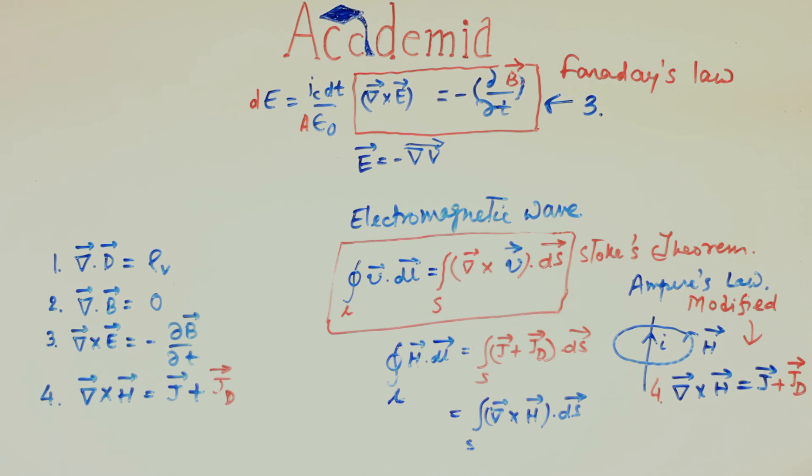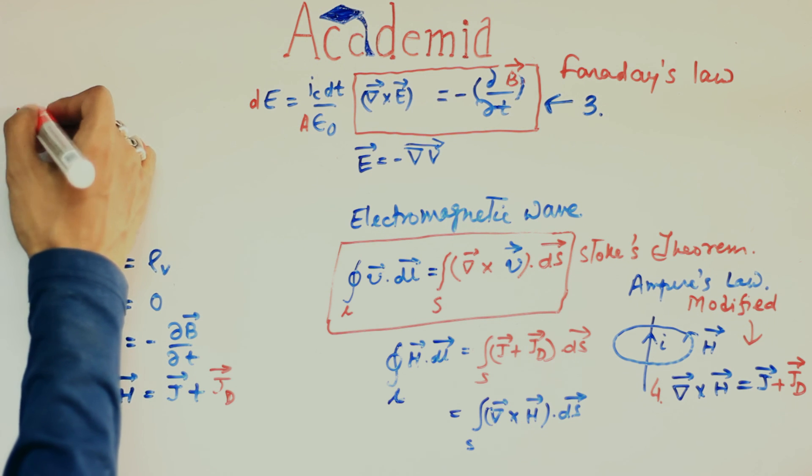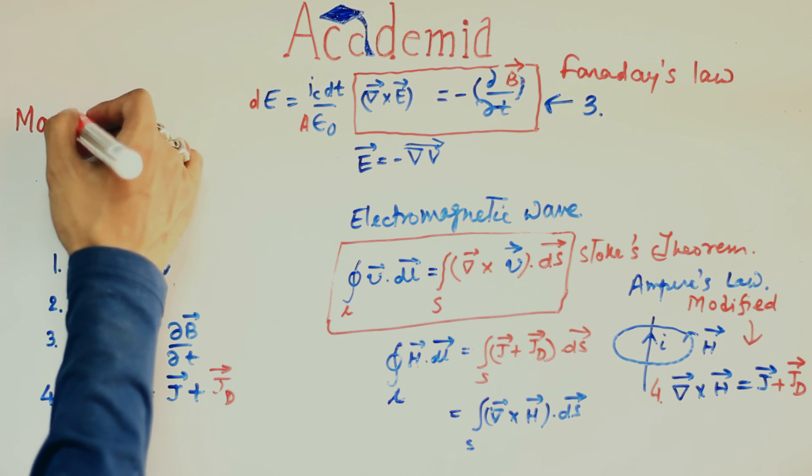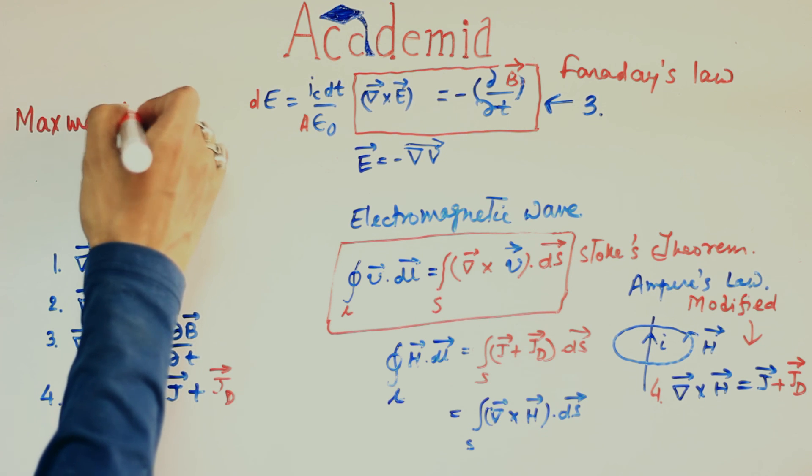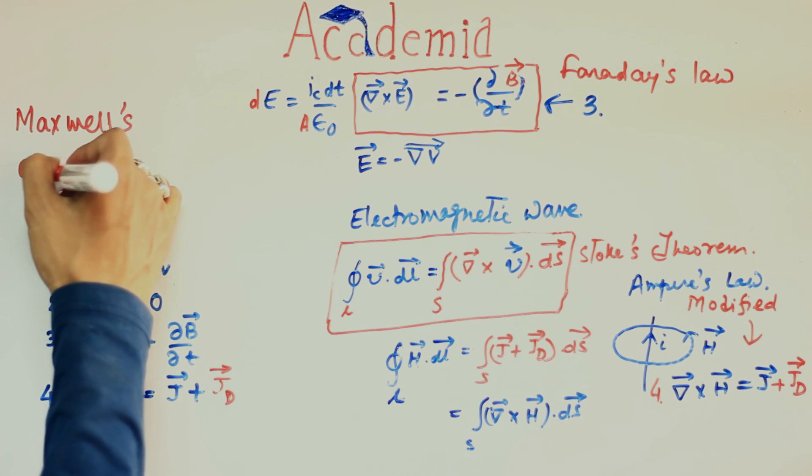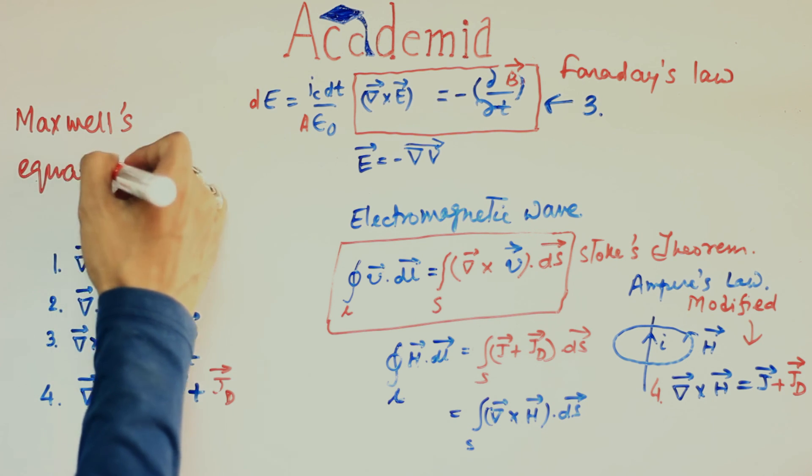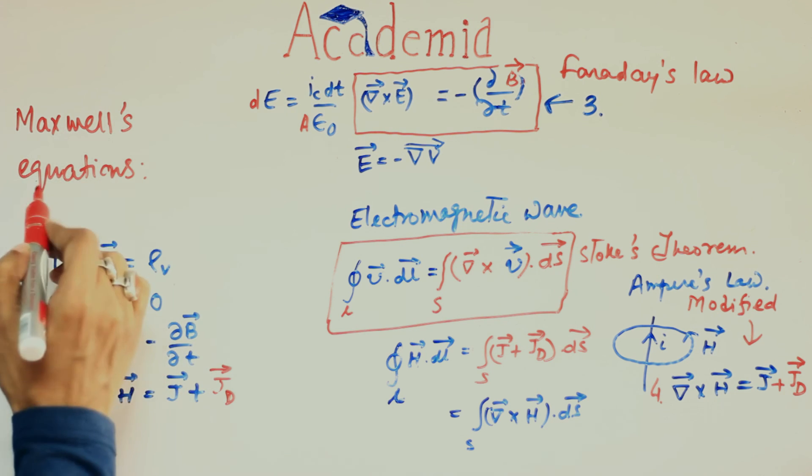So, all of them can together be called as Maxwell's equations of electromagnetic wave, Maxwell's equations of electromagnetism.